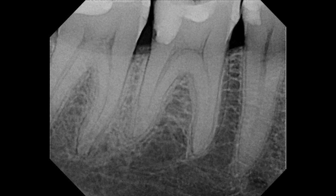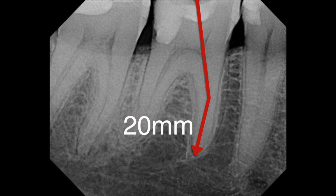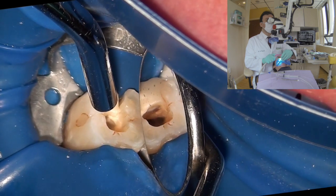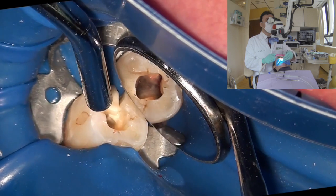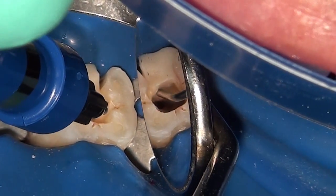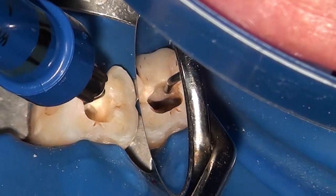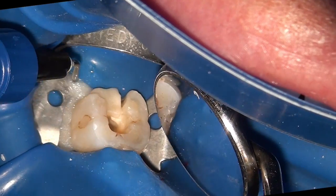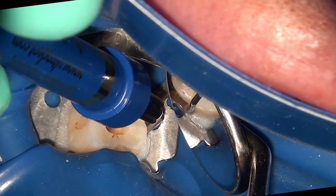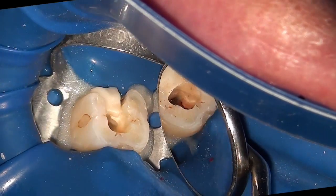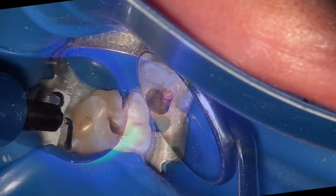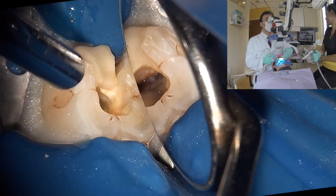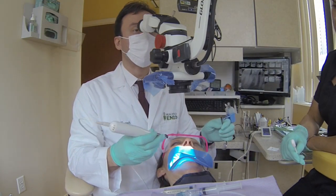As usual in these types of cases, we first determine the estimated working length — here we estimate it to be 20 millimeters. I've skipped through the access preparation, so we can see that we've just removed the coronal pulp and you can see the orifice of the canals. Then I proceed to place this caulking material to seal any potential short circuits that may be present and could trip off the apex locator. Once the area has sealed and we have aseptic control, after curing we now have fairly good isolation and you can see four orifices in this canal.